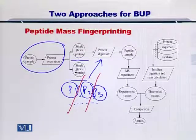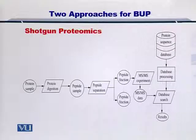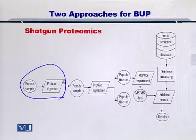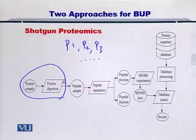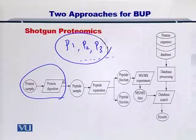Different from the peptide mass fingerprinting approach, in the shotgun proteomics approach, you take the entire protein mixture, and instead of separating the mixture into individual proteins p1, p2, p3, and so on, you actually insert all of these proteins into the enzymatic digestion process.